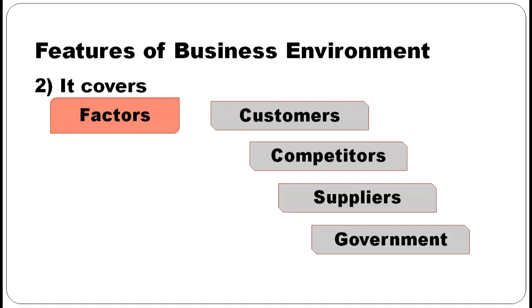The factors are: customers — definitely taste and fashions will influence the business; competitors — if they adopt new technology, you will also adopt the same; suppliers — if they supply raw materials of a new type, for example, plastic came as a new product supplied by suppliers, so we started using plastic utensils, plastic buckets, plastic sheets, etc. These factors will affect the business environment.